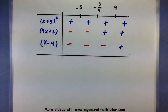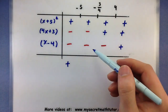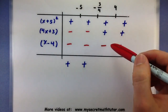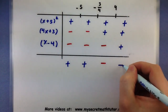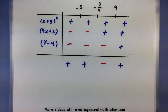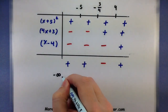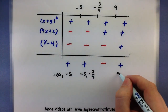Time to put all of this together. All of the factors are being multiplied, so we will multiply all of our signs. On the first interval: positive times negative times negative — positive. Positive times negative times negative — positive. Now positive times positive times negative — negative. And the last one: positive times positive times positive — positive. So the intervals where the polynomial is greater than zero are: negative infinity to negative 5, negative 5 to negative 3 quarters, and 4 to infinity.